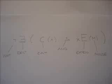Some words about logic. The sentence 'the cat has not eaten the mouse' would be put into logic language in the form of: there does not exist X, which would be a cat and which would have eaten a mouse.